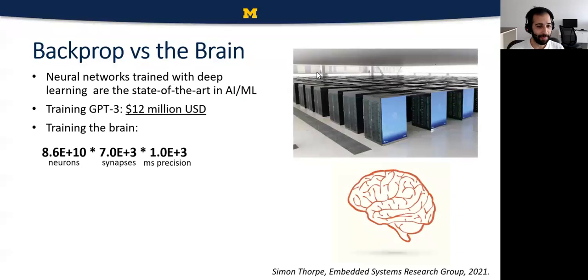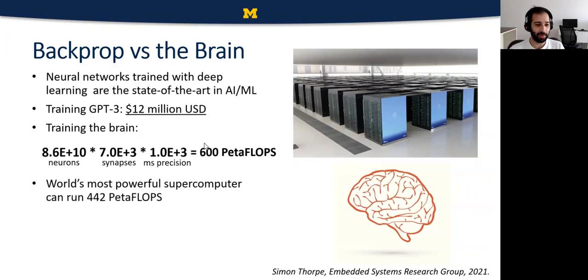If we were to train the brain on the world's most powerful supercomputer, the Fugaku supercomputer, we can approximate the brain to have 86 billion neurons, each with a fan out of 7,000 synapses on average. At millisecond precision with 1,000 updates per second, we need a system that can operate on 600 petaflops. The Fugaku can run 442 petaflops at 30 megawatts, while the brain only needs something like 12 watts.